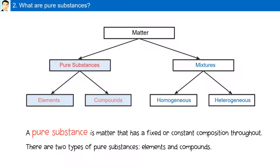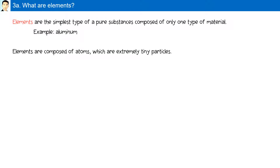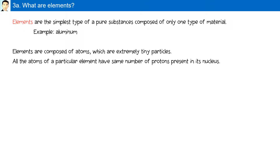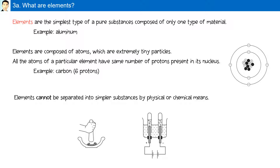What are elements? Elements are the simplest type of pure substance, composed of only one type of material — for example, aluminum. Elements are composed of atoms, which are extremely tiny particles. All the atoms of a particular element have the same number of protons in its nucleus; for example, each carbon atom has six protons. Elements cannot be separated into simpler substances by physical or chemical means.